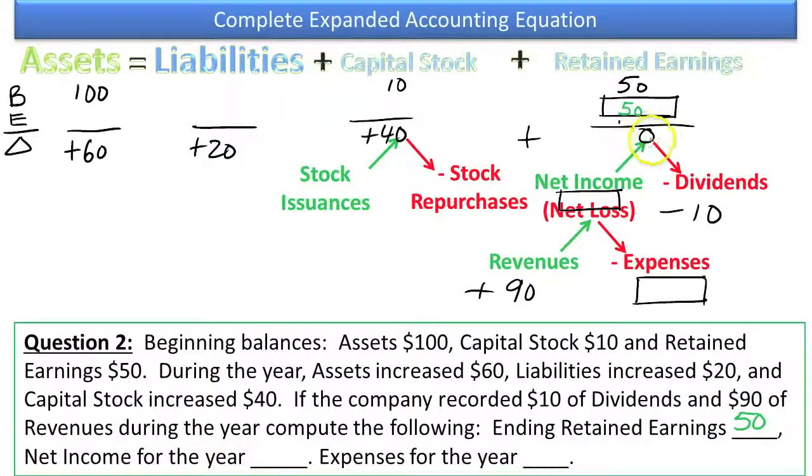Net income for the year: If retained earnings didn't change and the basic formula for retained earnings is your beginning retained earnings plus your net income minus your dividends equals your ending retained earnings. Beginning retained earnings are $50, Net income we don't know yet, but we do know our dividends are $10 and we do know that we ended with $50. If you just solve for the unknown, $50 plus something minus $10 equals $50, net income has to be $10. It goes up by $10 and then they get all paid out. They go up by $10 because you earn some net income and then you pay them all out in the form of a dividend, thus leaving retained earnings at the same $50 that you began with.